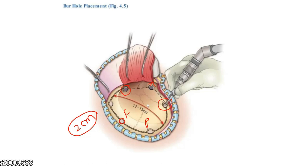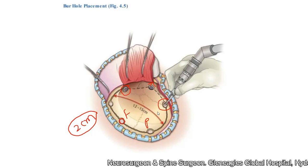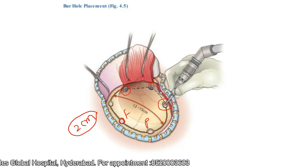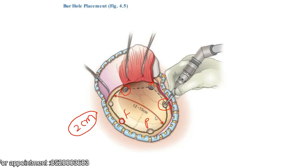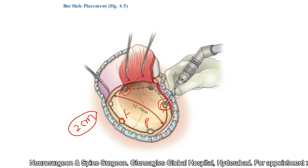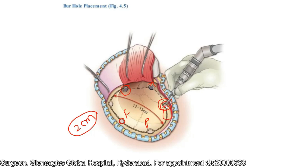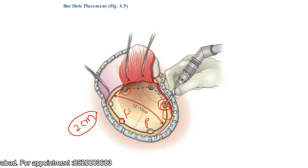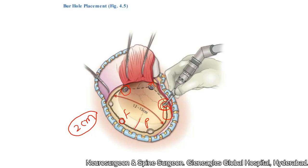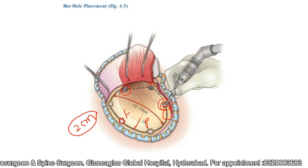Once a sufficient number of burr holes are placed, a number three Penfield dissector is used to strip the dural attachments from the undersurface of the calvaria. Many surgeons can complete the craniectomy with a single burr hole, but I prefer to place multiple burr holes so that at each one I use the Penfield to strip the dura from the calvaria, also along my line of craniectomy. This ensures the dura is not cut while you are elevating the bone flap, and is especially important in elderly patients and at suture lines like the coronal suture where the dura is tightly adherent to the skull.